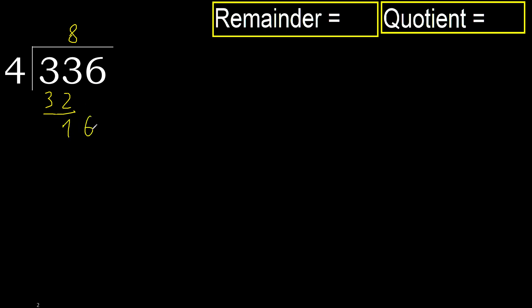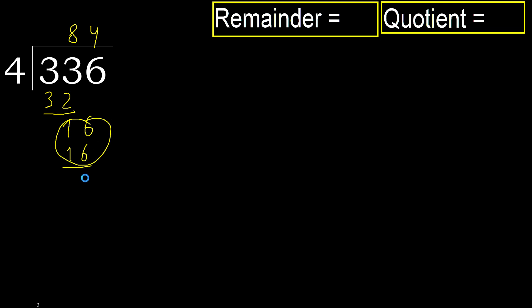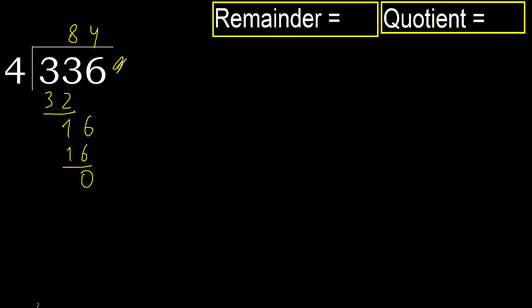Next, bring down to get 16. 4 multiplied by 5 is 20, which is greater. Multiply by 4: 16 is not greater. Subtract — that leaves no remainder, therefore finish.